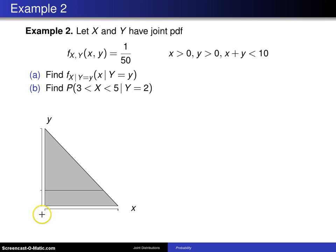Those are continuous random variables and if you label the axes here as 0 and 10, 0 and 10, then this shaded region right here is the support script A for the joint distribution of X and Y.